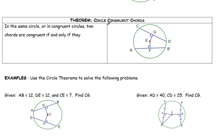And this last theorem is that in the circle or congruent circles, two chords are congruent if and only if they are equidistant from the radius. And the word equidistant just means that they are perpendicular from the radius. So because these are both perpendicular from the radius,